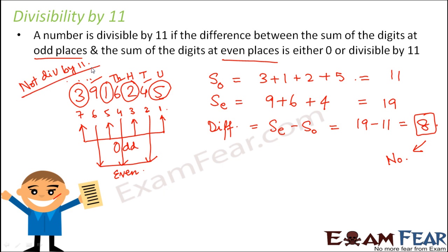So this is the divisibility rule of 11. I know that this is a little complicated, but it is not difficult. We will take another example — the more examples we take, the better the understanding becomes.